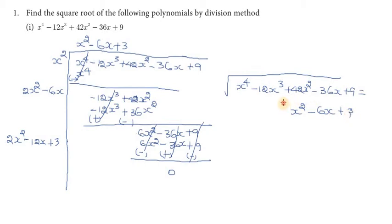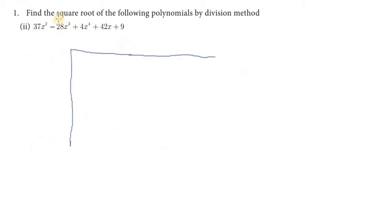The answer for the first sum is x squared minus 6x plus 3. The square root is plus or minus that expression. Now for the second substitution — second problem: 4x power 4 minus 28x cube plus 37x square plus 42x plus 9. The first term is 4x power 4. Since sign is plus, we proceed.